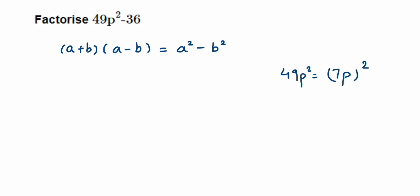Right, so in place of a we will write 7p - that we understood. Now what about b²? 36 is the square of which number? It's 6. So in place of b we will get 6. Now we know what a and b are, and we can directly substitute.